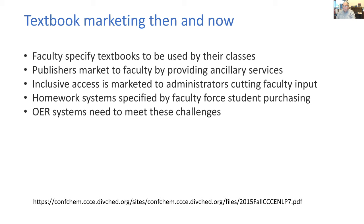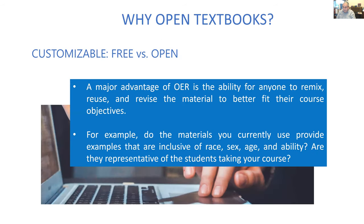What causes all this? Faculty specify textbooks to be used by their class, and publishers have therefore marketed to faculty by providing ancillary services. The publishers don't really care about the textbooks anymore — they want to sell you the homework system, which the student has to buy. Then the other arrow in the publisher's quiver is inclusive access. But who are they marketing inclusive access to? Not to faculty — you don't have any choice anymore.